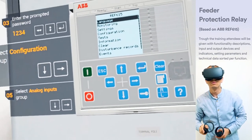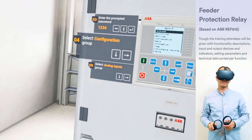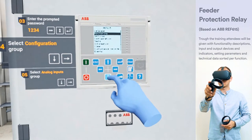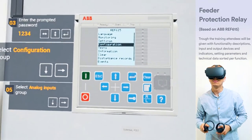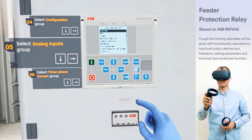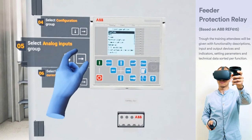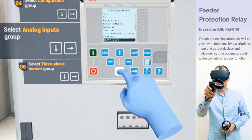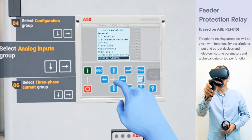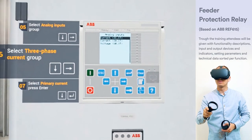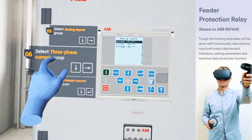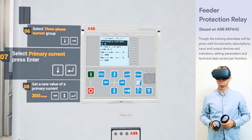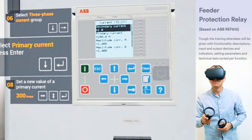The main menu list is presented. Scroll the view down and select configuration group, then press right to move forward to the submenu. Now scroll down and select analog inputs. Among the following settings, select three-phase current. Scroll down to primary current and press enter to enter the parameter setting mode.